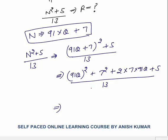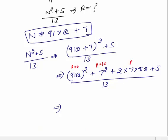Now 91 is completely divisible by 13, so the remainder for the 91-squared term is 0, and for the 2 into 7 into 91Q term is also 0. For 7 squared equals 49 divided by 13: 13 times 3 is 39, remainder is 10. Remainder of 5 divided by 13 is 5. Adding all remainders: 10 plus 0 plus 0 plus 5 equals 15.